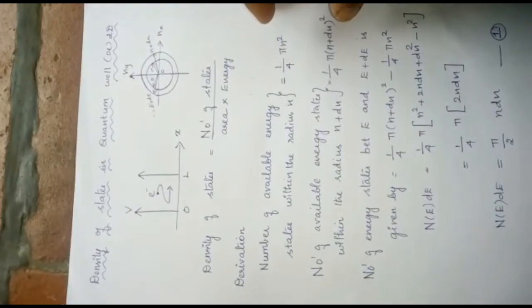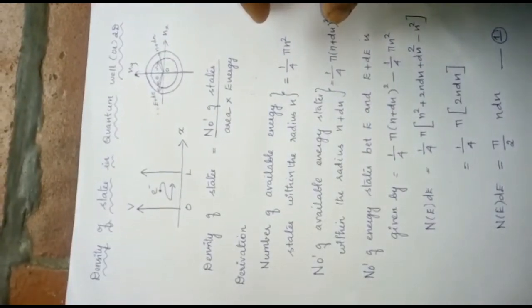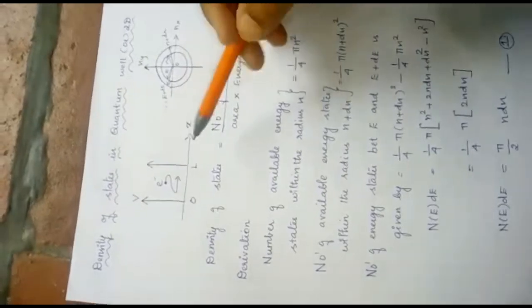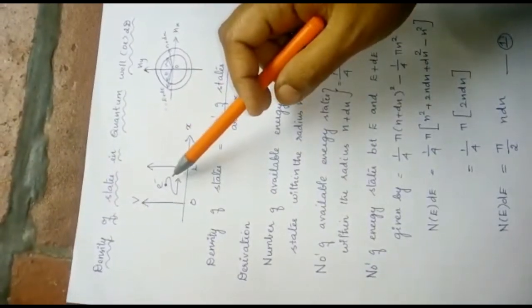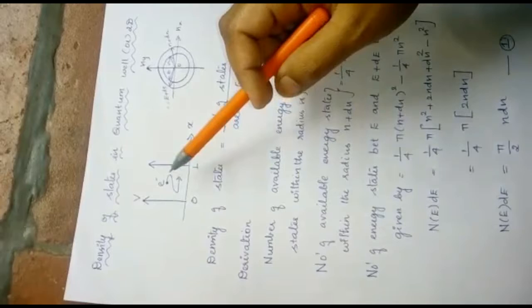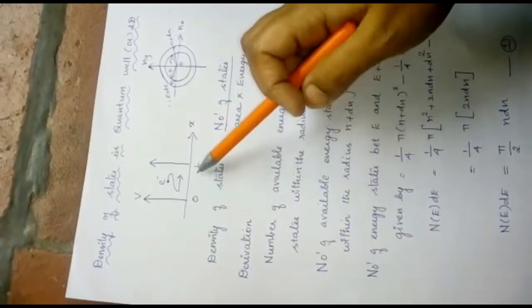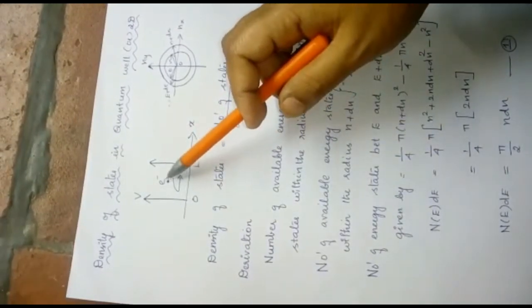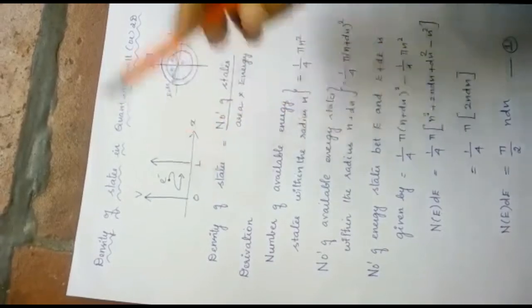Density of states in a quantum well or in a two-dimension. Here, now consider a two-dimensional potential well. Its length is varied from 0 to L. Here the electron is placed inside the potential well.